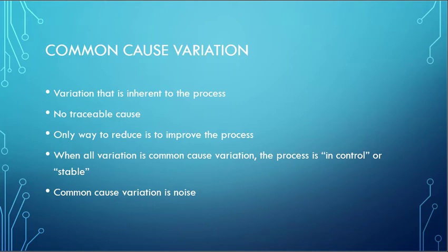When all of the variation in the system is common cause variation, that is when the process is in control or stable, and the variation will be predictable.